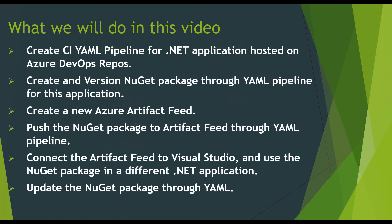Here are the things that we will do in this video. First, we will create a new YAML pipeline for a dotnet application that is already present on Azure repos. Then we will create and version a NuGet package in the YAML pipeline. Then we will create a new Azure artifact feed and publish that NuGet package to it. And then we will see how we can use that artifact feed in a separate dotnet application using Visual Studio, and also how to update the NuGet package through the YAML pipeline.